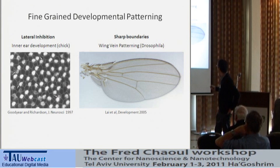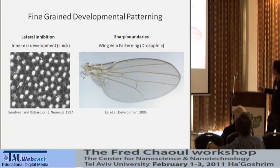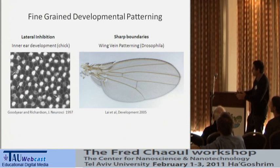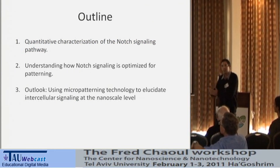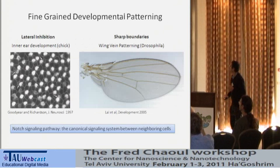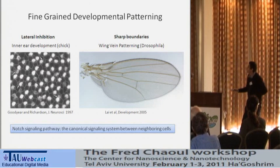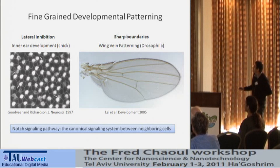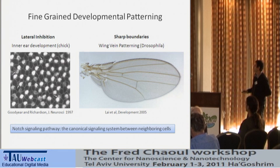Another example of such a fine-grained pattern is shown here in the wing of a fruit fly. You see these veins, which are pretty sharply defined. During development, the cells have to decide whether they belong to the vein or to the intervein regions — you have to define a one-cell boundary. Interestingly, both of these systems use the same signaling pathway — the Notch signaling pathway — which is the main topic of this talk. The Notch signaling pathway is the canonical signaling system between neighboring cells across all the animal world.